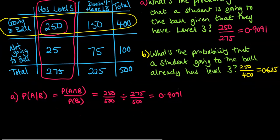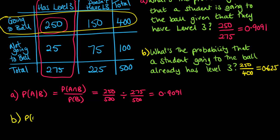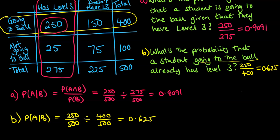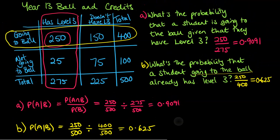If we call this one part B, I'll do the same with this one for people that prefer to use the formula. We've got the probability of A and B - the probability of the student going to the ball and has level 3, which is 250 out of 500 - divided by our group that we want it out of. The probability of the student going to the ball is 400 out of 500, and that comes to 0.625. However you want to do this, whether using the formula or going for a more intuitive approach, that's totally fine.